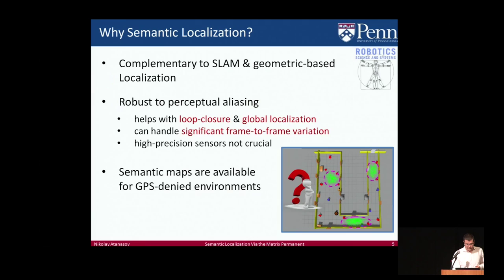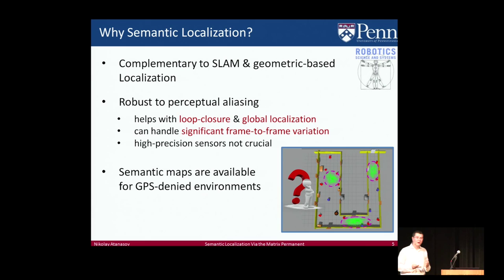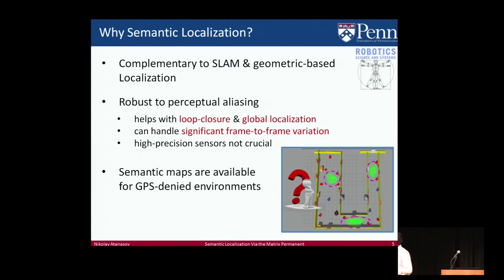Why should we care about semantic localization if we already have iBeacon and Project Tango? This is a complementary approach to SLAM and geometric localization techniques. As I'll show, it's robust to perceptual aliasing, which helps a lot with loop closure and global localization, and can handle significant frame-to-frame variation. In addition, there are many environments where we already have semantic maps we can use for this task.